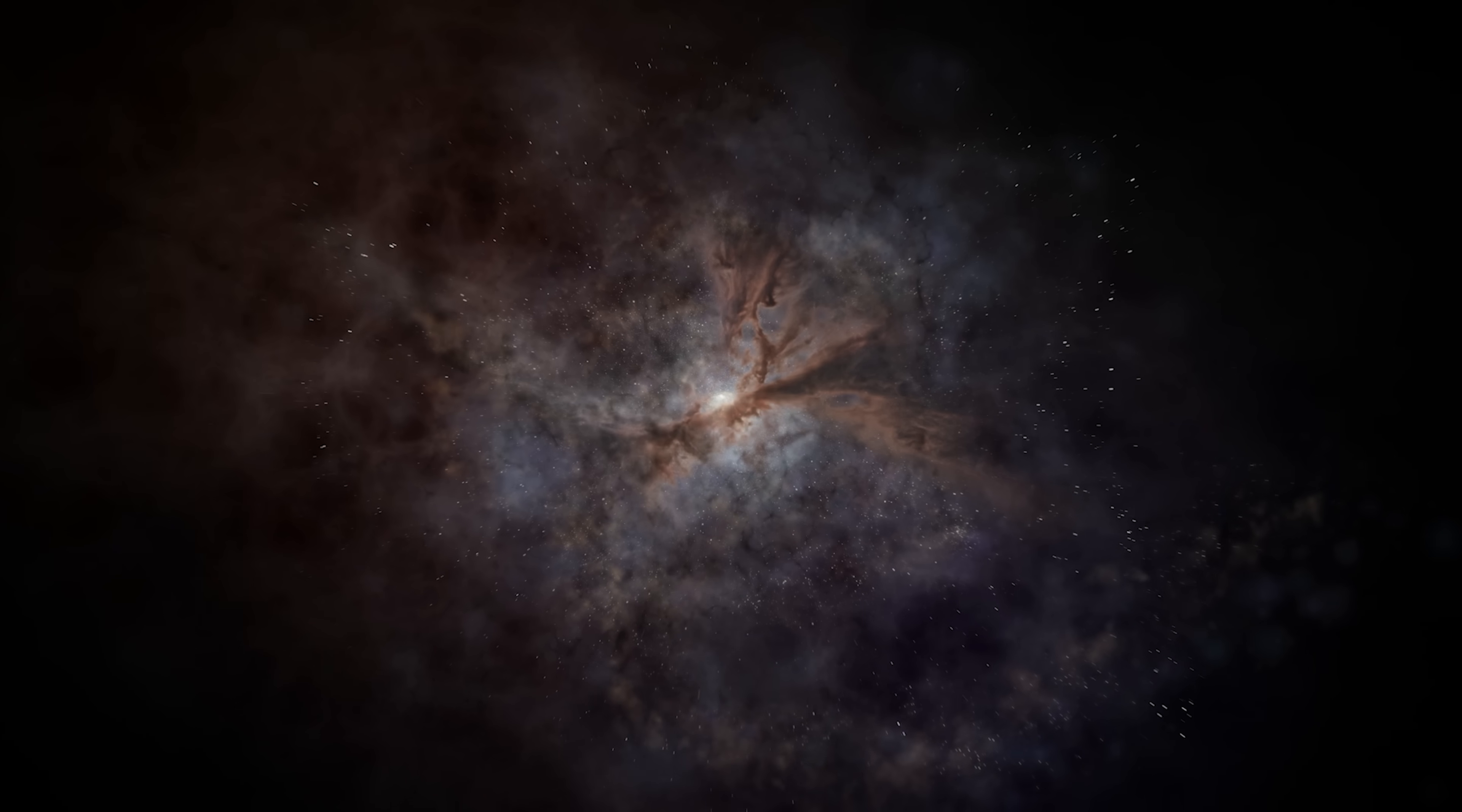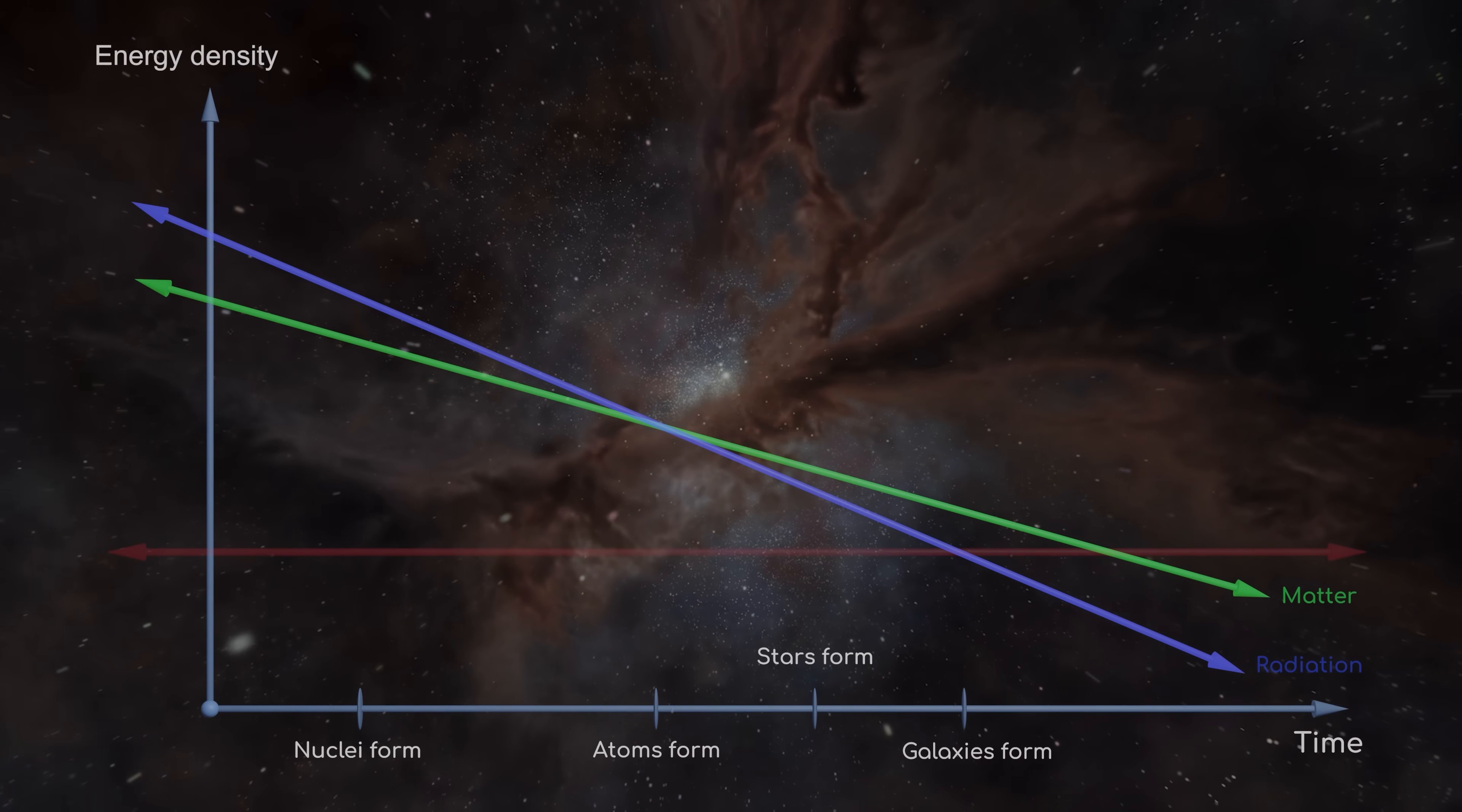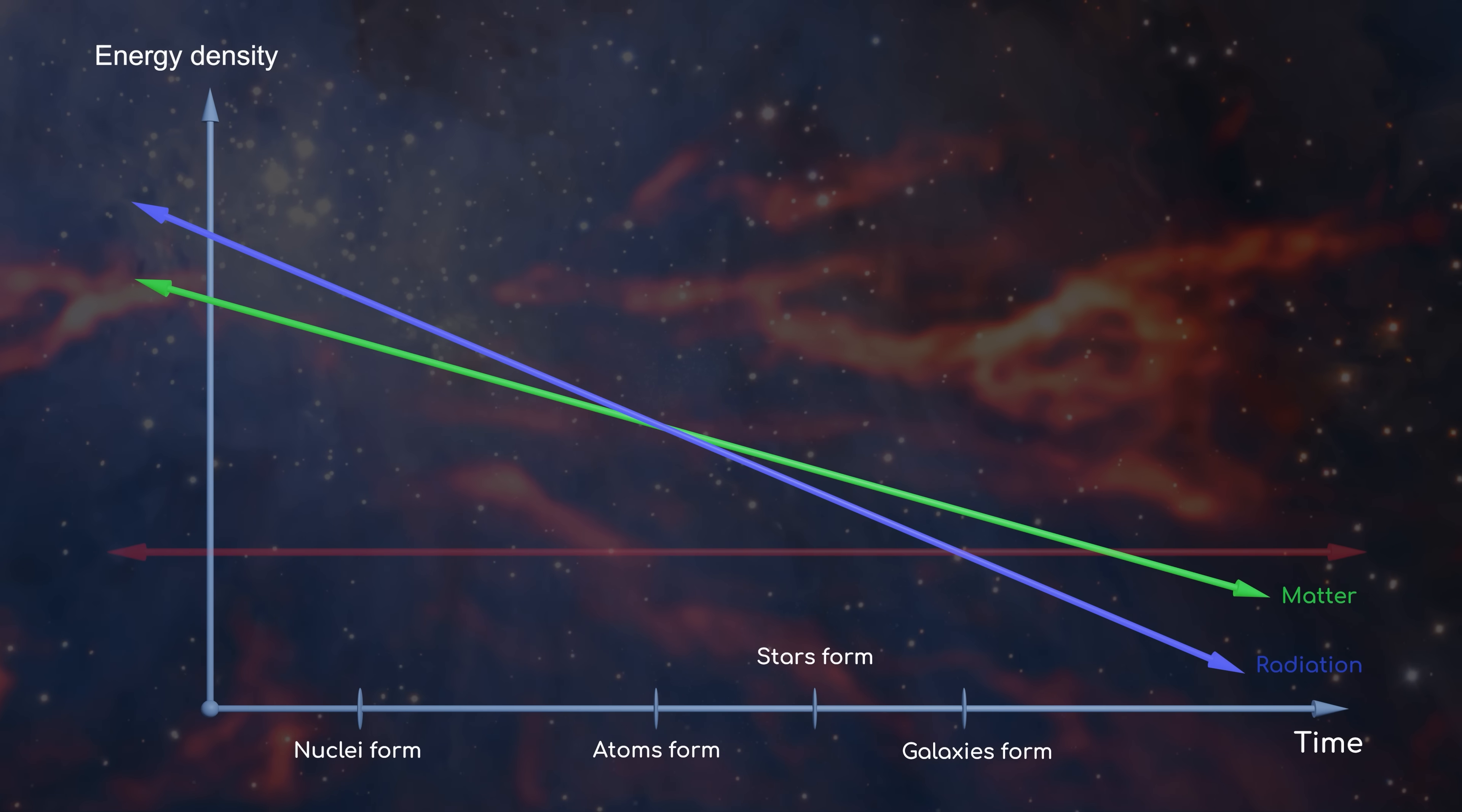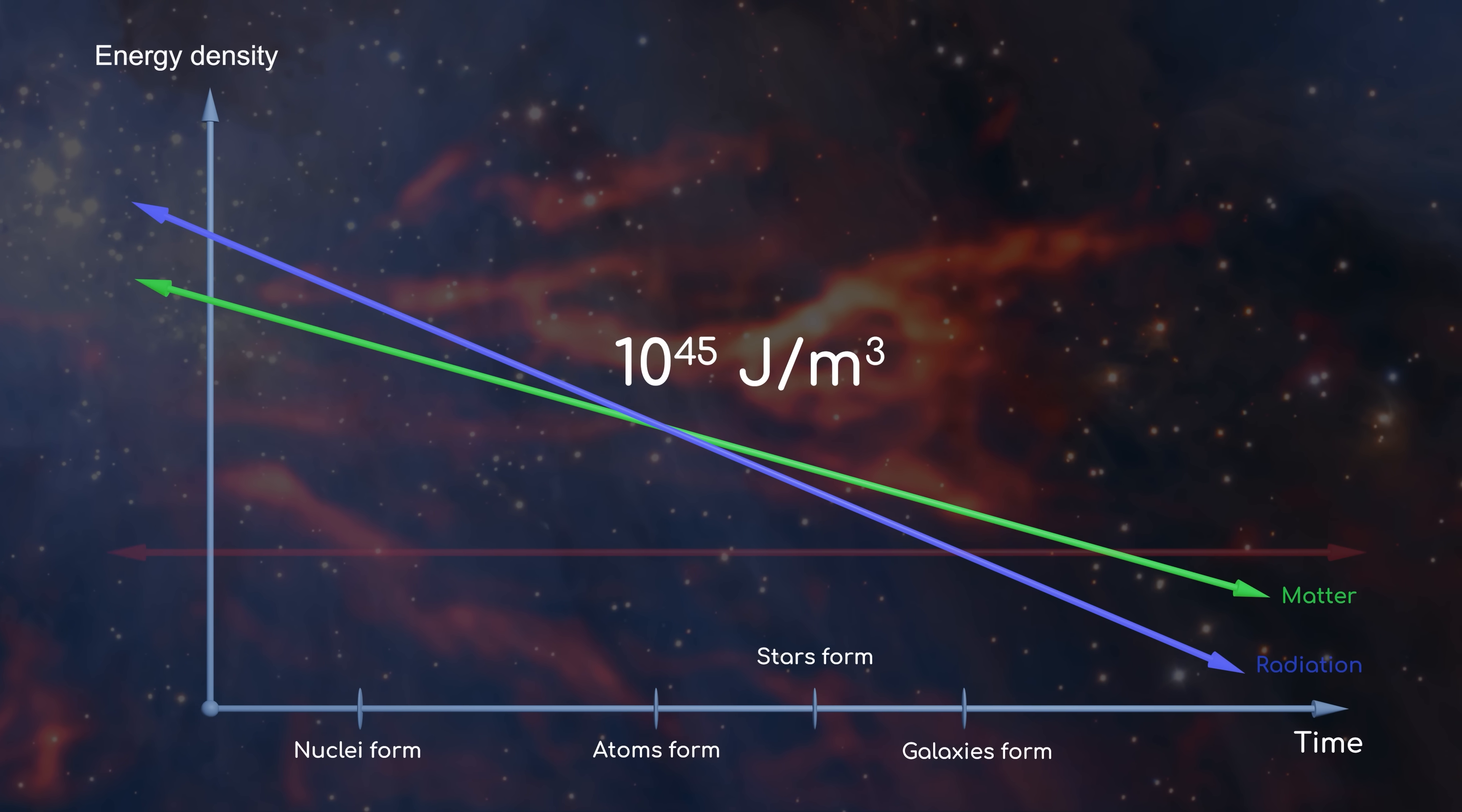Using some clever maths and the principles of quantum field theory, scientists attempted to predict how much the energy density of dark energy ought to have been. Their result was larger than the result we see in nature. How much larger? Their value came in at an astounding 10 to the power 45 joules per cubic meter.